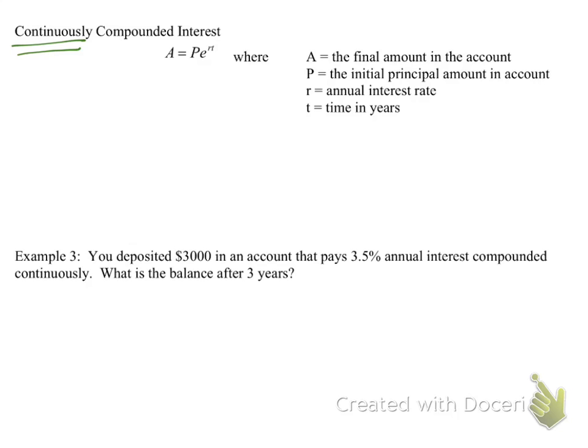So for this first example, you deposited $3,000 in an account that pays 3.5% annual interest compounded continuously. What is the balance after three years? So again, because it says continuously, we're going to use this PERT formula. So we want to find out what is the balance after three years, so we need to find out what our A is. Our P, what we started with, is $3,000.